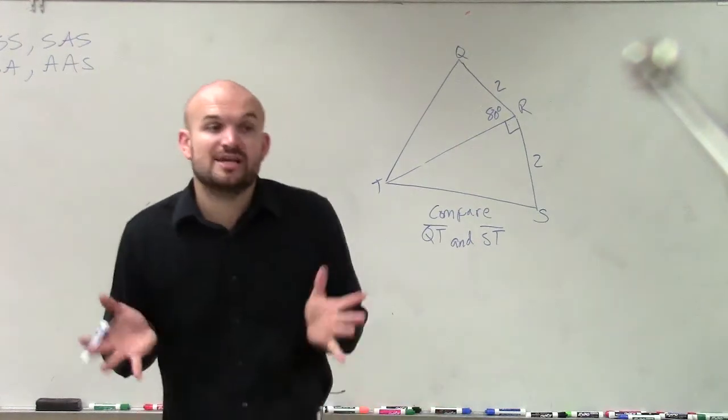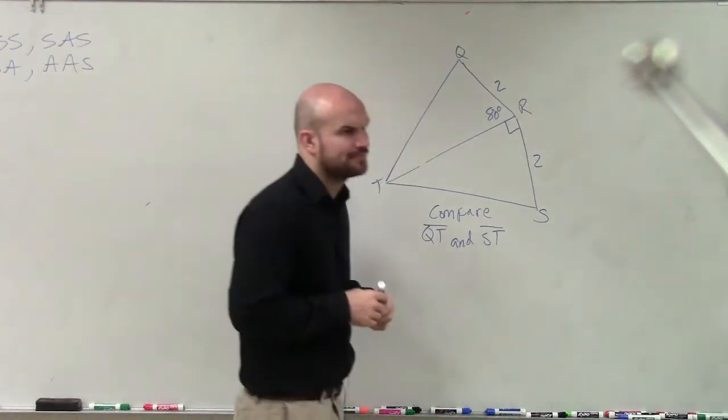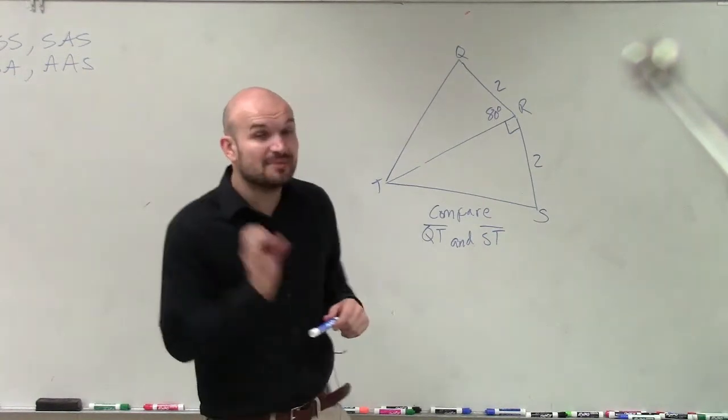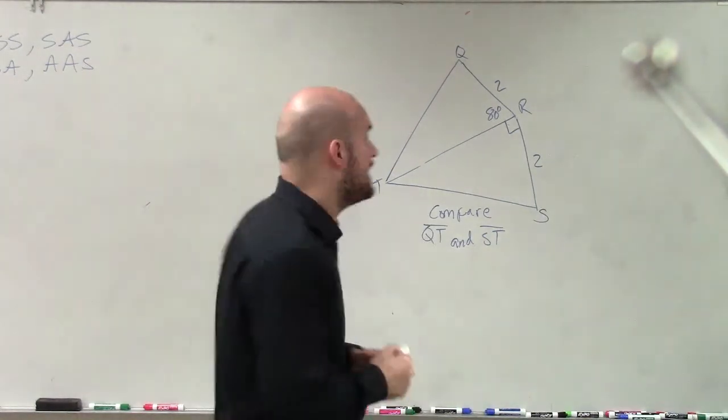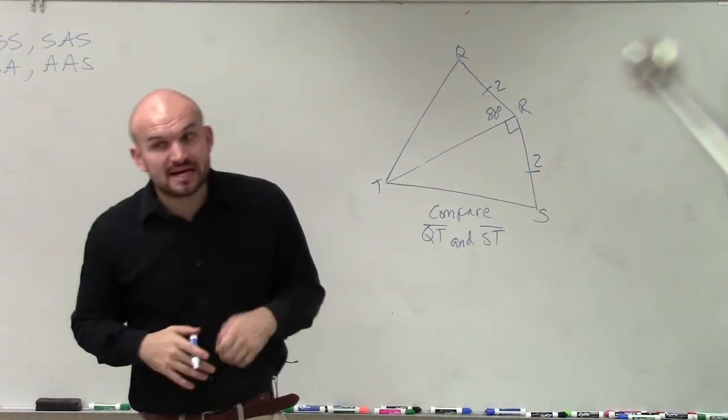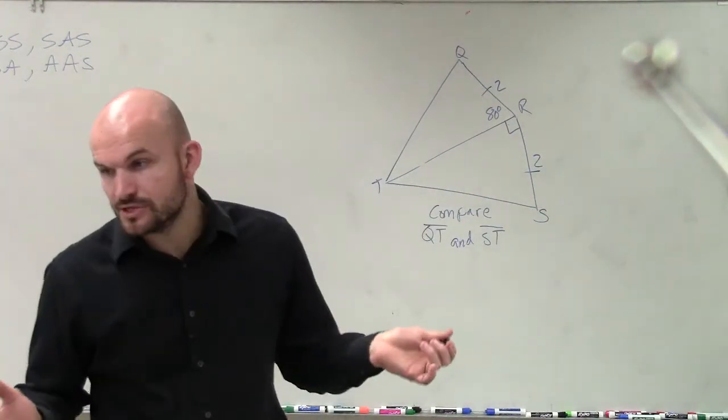Remember the hinge theorem. The hinge theorem only works when we have two congruent sides and an included angle. So we know those two sides are congruent, right? Obviously, two and two.